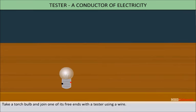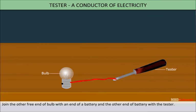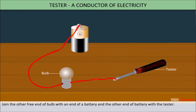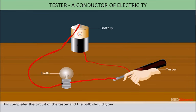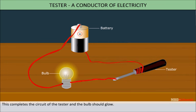Take a torch bulb and join the free end of tester with wire. Another free end of the bulb joins with the other end of the battery, and the other end of the battery joins with the tester. This completes the circuit of the tester and the bulb should glow. If the bulb does not glow, it means that the tester is not working.